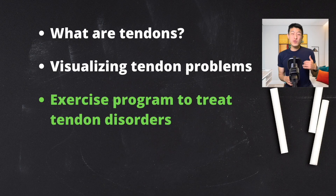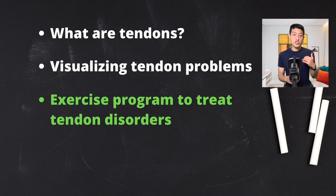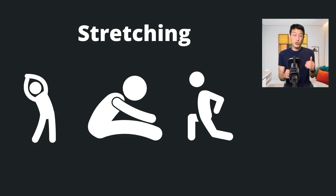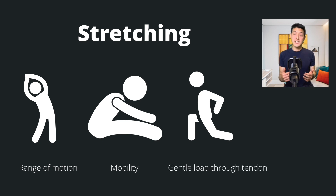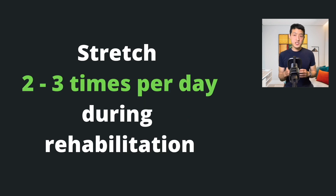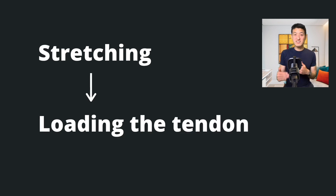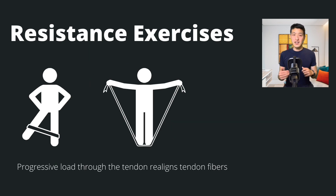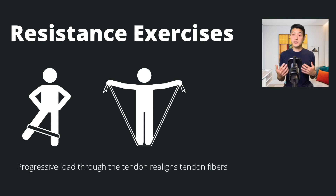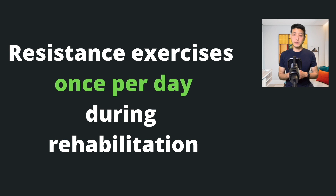The goal of treatment is to remodel these degenerated and disorganized fibers back into a state where they are tightly packed together. This is where a structured and progressive rehabilitation program comes in. We start first with stretching exercises. Stretching helps regain range of motion and mobility, and also puts gentle load on the tendon, which helps start the remodeling process. Try to aim to stretch two to three times a day. Once your pain begins to improve, we want to progressively load the tendon — first starting with low resistance exercises and eventually increasing that resistance. This progression helps the tendon fibers remodel back into their normal position. Try to do resistance exercises once a day during your rehabilitation program.